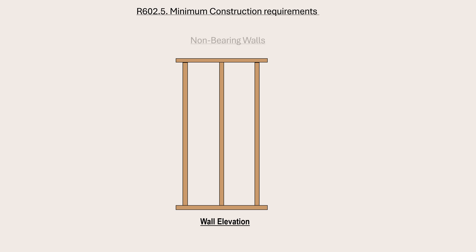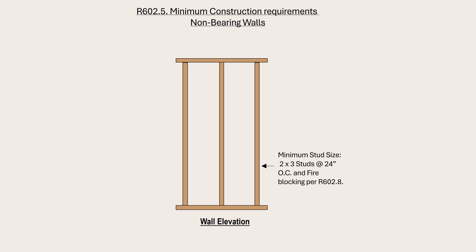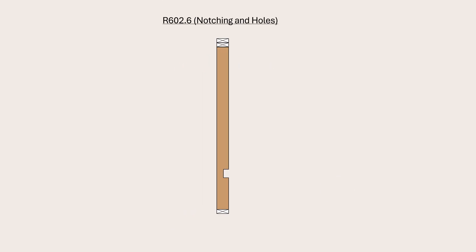Interior partition walls are non-load bearing walls intended to create partitions or rooms. The requirements for the construction of interior partition walls are specified in Section R-602.5. Partition walls should have minimum 2x3 studs at 24 inches on center and at least a single top plate. The code also allows flat studs spaced at 16 inches on center for partition walls that are not used as braced walls. Notching and drilling requirements for partition walls are also provided in Section R-602.6. For non-bearing partitions, the maximum limit for drilled holes is 60% of the depth of the stud, and the studs do not need to be doubled if the drilled holes exceed 40% of the depth.